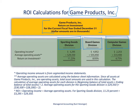Return on investment is calculated by taking operating income and dividing it by average operating assets. You can look at the footnotes at the bottom of the slide for details on what went into those numbers. For the sporting goods division — all figures in thousands — operating income was $3,295,000 and average operating assets were $29,350,000. Dividing one by the other gives an ROI of 11.23%. Another way to put it: for every $100 in average operating assets, the sporting goods division generated about $11.23 in operating income.